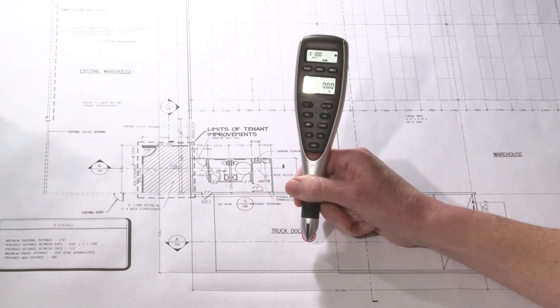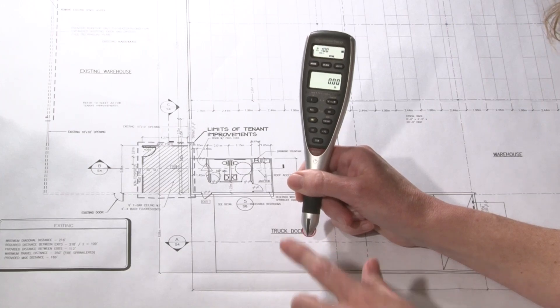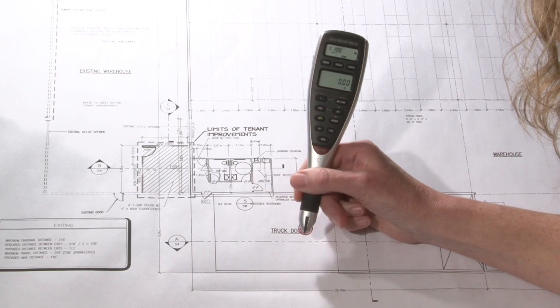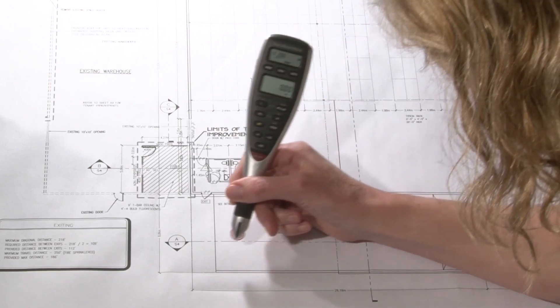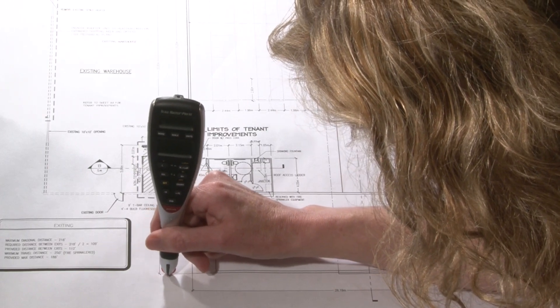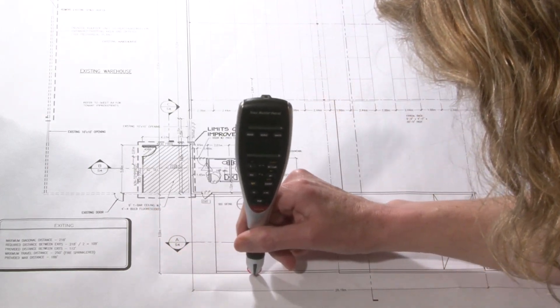For this example, I'm going to find the linear area and volume of this trucking dock. First, I'm going to take this measurement which will be the length. It's a linear measurement. I simply line up the pointer and roll, keeping it smooth on the line.